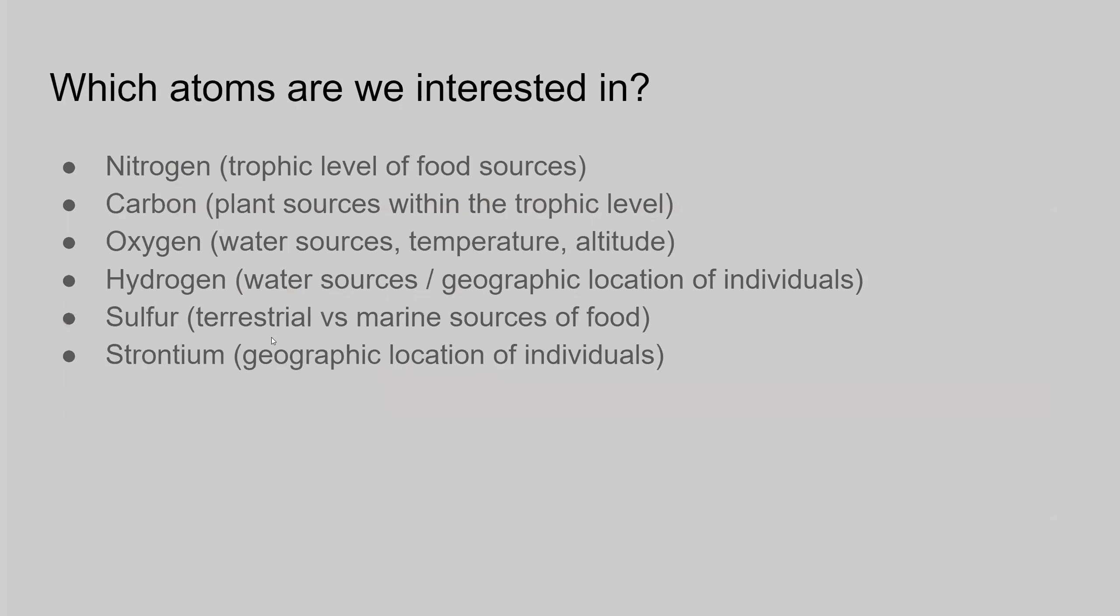I will briefly touch on some of the most common atoms studied when piecing together ancient human diets. Here they are. This is more of a 10,000 foot overview and a vast oversimplification, but the atoms are nitrogen, carbon, oxygen, hydrogen, sulfur, and strontium. And you can kind of see here what each of these can tell about the particular human that is under review when this analysis is done. So I hope you enjoyed this video and thank you for watching.